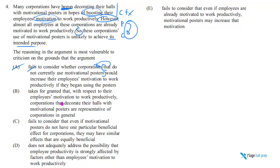B says: takes for granted that the corporations that decorate their halls are representative of corporations in general. We don't care if they're representative. You can imagine an argument that makes the mistake B describes — where we talk about a subset of companies A, B, C, and then from what happens in those companies, we try to generalize to all companies, requiring us to check whether A, B, C is representative. But that's not the flaw here.